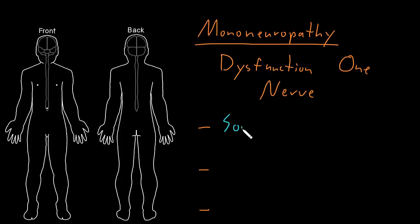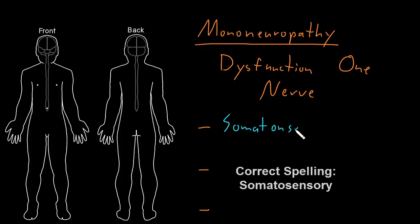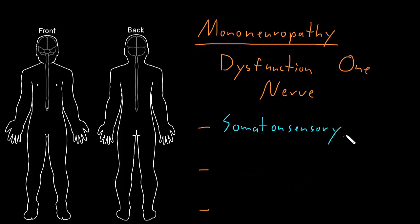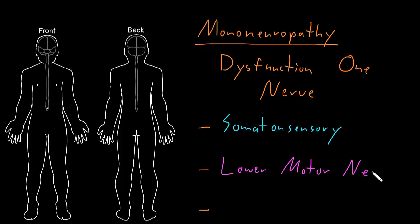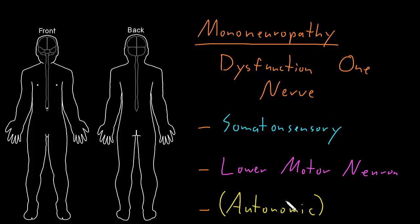We can have somatosensory abnormalities from the somatosensory axons traveling through the nerve, which will involve the skin and or the deep tissues innervated by that nerve. There can be lower motor neuron abnormalities of the muscles innervated by that nerve, if the lower motor neurons passing through the nerve are involved. And there could be autonomic abnormalities if the autonomic axons traveling in that nerve are involved — though in common mononeuropathies, autonomic abnormalities are usually very subtle or absent compared to the somatosensory and lower motor neuron findings.